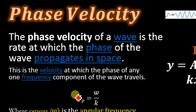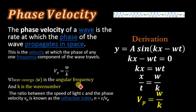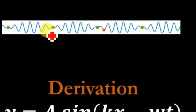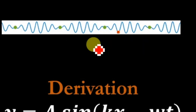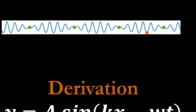The phase velocity is equal to vp = ω/k, where ω is the angular frequency and k is the wave number. In this short animation you will see the red and green dots — the red dot represents the phase velocity and the green dot represents the group velocity. The phase velocity is the velocity of a single phase of a wave.